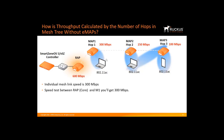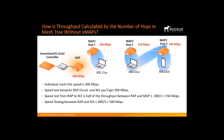If we run a speed test from the root AP to MAP two, every packet has to go through one wireless hop to M1 and then another from M1 to M2. While the root AP is sending to M1, M1 can't transmit to M2, so the second packet has to wait — resulting in throughput of 300 divided by 2, or about 150 Mbps to MAP two. Speed testing to M3 means every packet is repeated three times, giving 300 divided by 3, or 100 Mbps. The effective throughput is the link frequency divided by the number of hops.